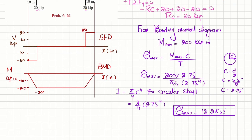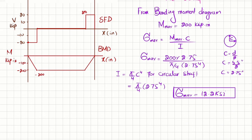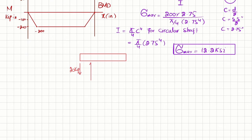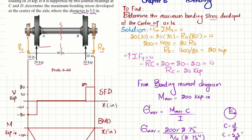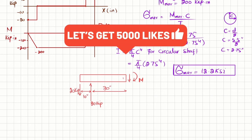Now we solve using a second method. We cut the shaft at the center and draw the free body diagram of one half. On one side: a load of 20 kips at the end (wheel), and an upward reaction of 20 kips at 10 inches from the end. The cut is 30 inches from the bearing. At the cut section there is a shear force and an internal moment M that we want to find.